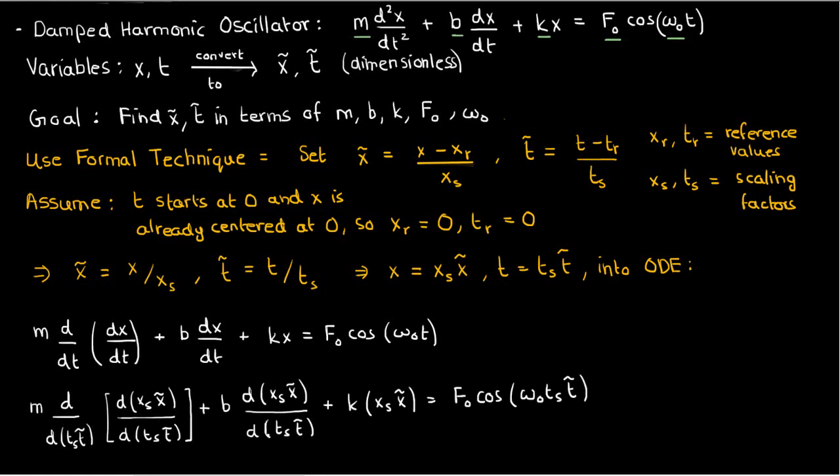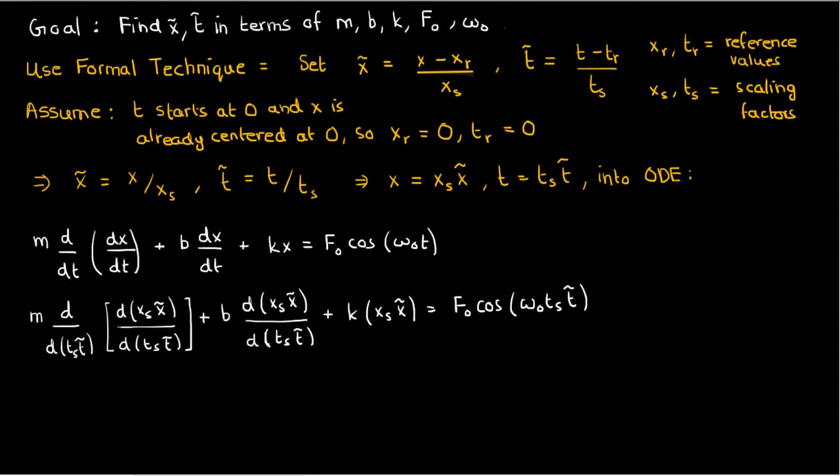Now look at the differentials of tₛ·t̃ and xₛ·x̃. The xₛ and tₛ are just constants in the differentials, so we can take them out. This is why I changed my second derivative to d/dt of dx/dt, to better help you visualize that there are actually two differentials of t in the denominator of the second derivative and only one differential of x in the numerator.